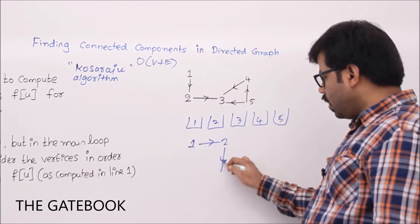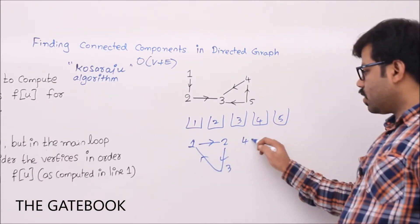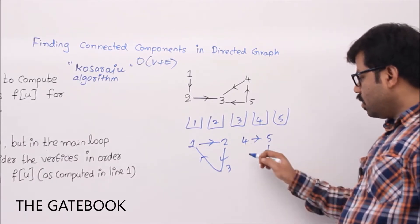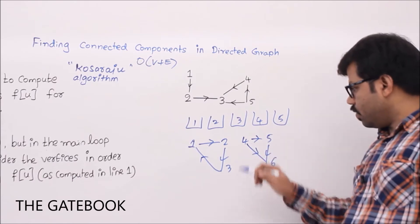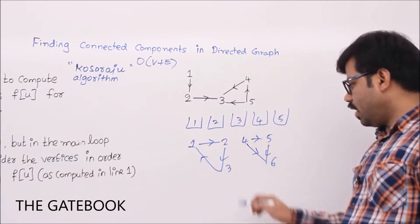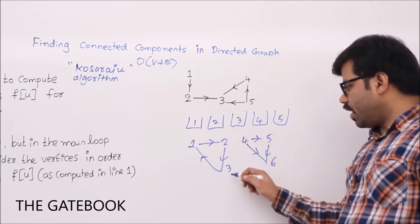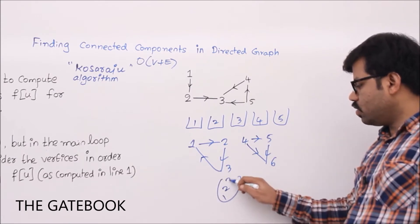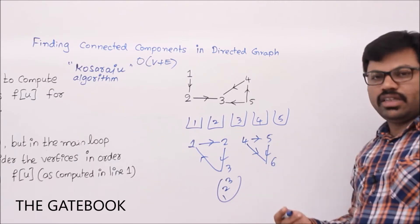Let's say: 1 to 2, 2 to 3, and 3 to 1 — forming a cycle. Add more vertices: 4 to 5, 5 to 6, and 4 to 6. In this graph, 1 to 2 there is a path and 2 to 1 also there is a path, so 1 and 2 belong to the same connected component. Similarly, 2 to 3 and 3 to 2 we can reach, so 1, 2, and 3 all belong to the same connected component.